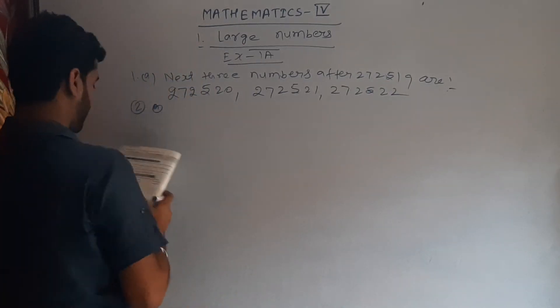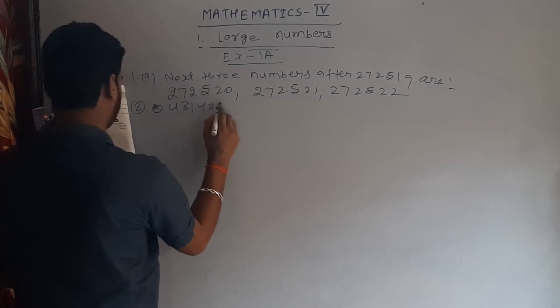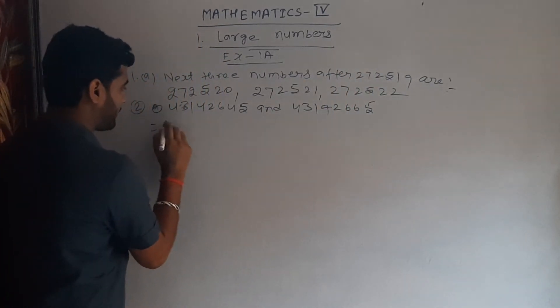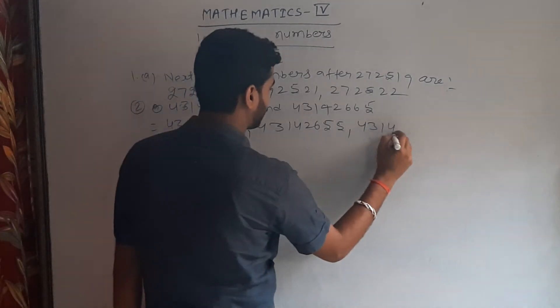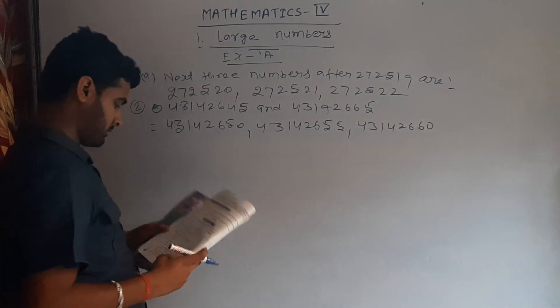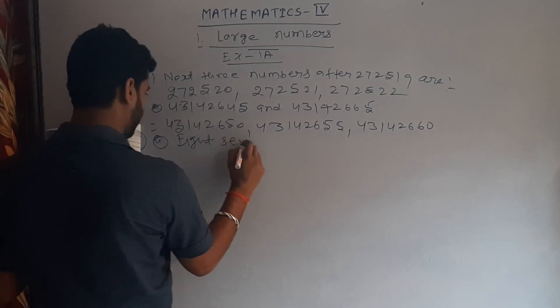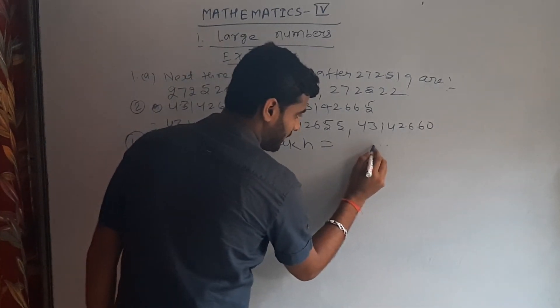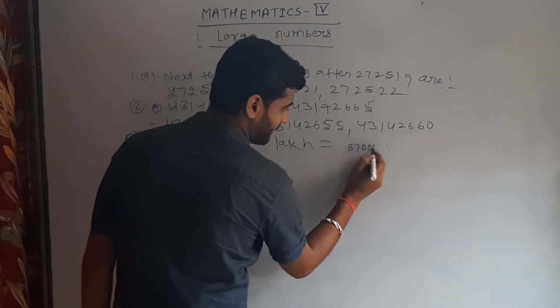Write the numbers between 4,31,42,650 and 4,31,42,660. So first number is 4,31,42,650, second number is 4,31,42,655, and the third number is 4,31,42,656.